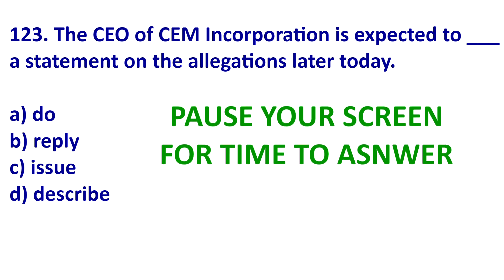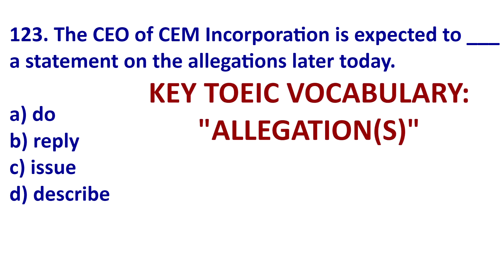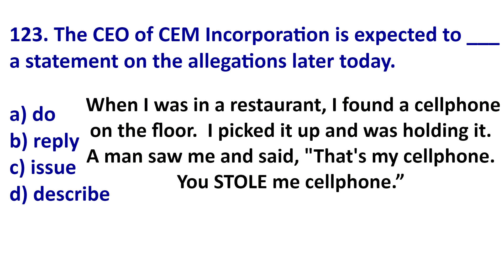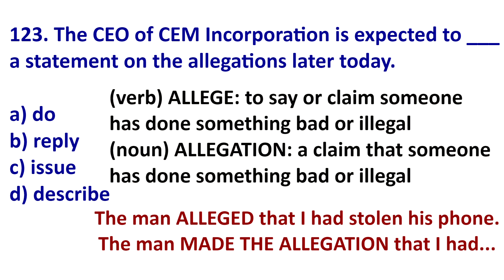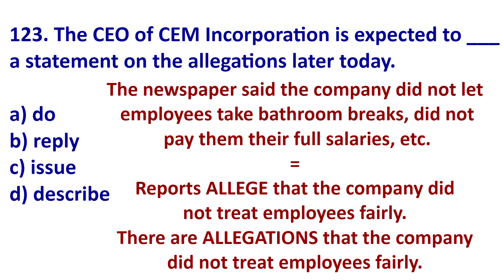Now let's look at question 123. First, let's look at one key vocabulary word: 'allegation.' For example, if I found a cell phone on the floor and a man saw me holding it and said 'you stole my cell phone,' the man alleged that I had stolen his phone. Another way to say this: he made the allegation that I had stolen his phone. The verb 'allege' means to say someone did something bad, such as a crime, but it might or might not be true — it is very similar to 'claim.'